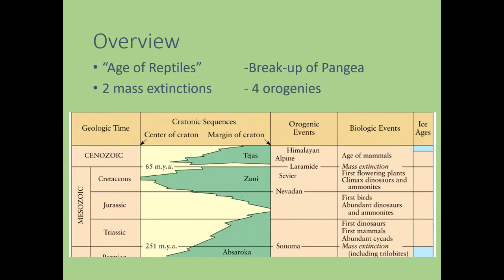Looking at the geologic time scale, the Mesozoic era is broken down into three periods: the Triassic, the Jurassic, and the Cretaceous. At the beginning of the Mesozoic we see the trailing end of the Absaroka transgression marked by a big regression, followed very shortly by the Zuni transgression, which ends very abruptly at the end of the Cretaceous. In terms of orogenic events, there are four in the Mesozoic: the Sonoman, the Nevadan, the Sevier, and the Laramide orogenies.